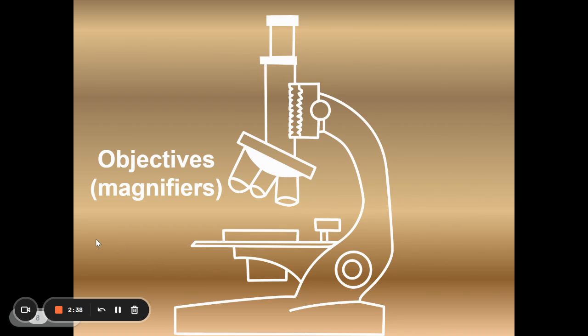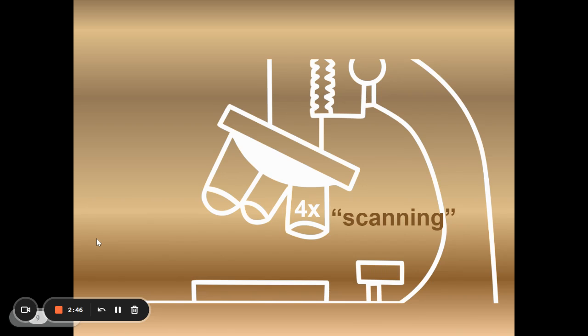Next we have the objectives themselves which may also be referred to as the magnifiers. Most of our microscopes do have three of them. The 4x is the smallest of the objectives and it has the lowest power. Usually this is referred to as the scanning lens.